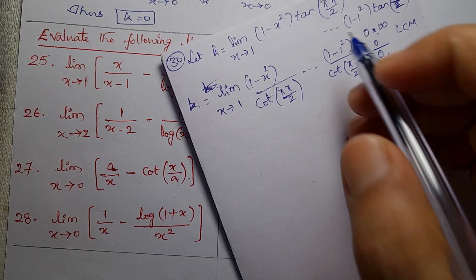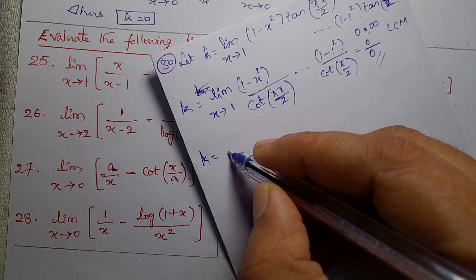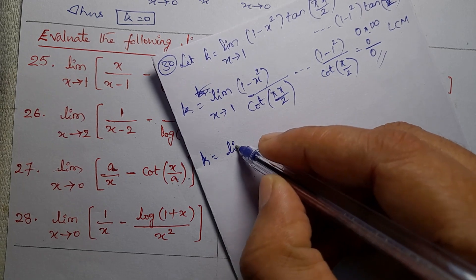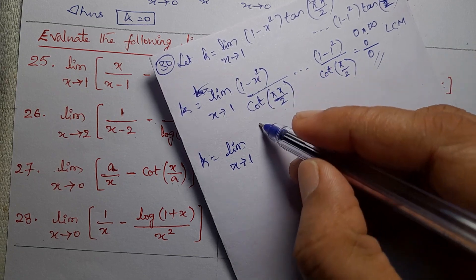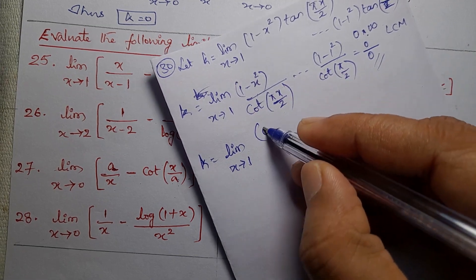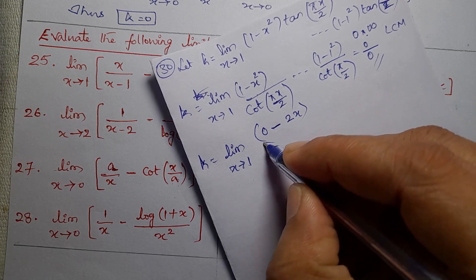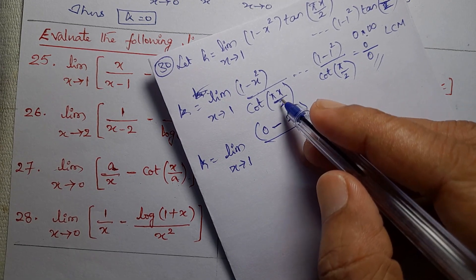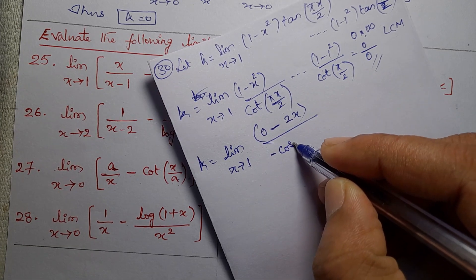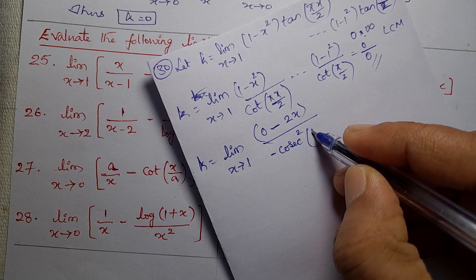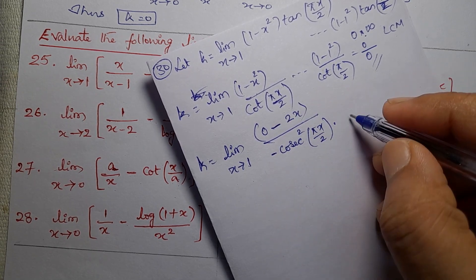Now we apply L'Hôpital's Rule. So K equals the limit as x tends to 1. The numerator: differentiation of 1 is 0, minus x squared differentiates to 2x. The denominator: differentiation of cot(πx/2). Now K equals — minus cosecant squared — again, πx/2 differentiated gives π/2.